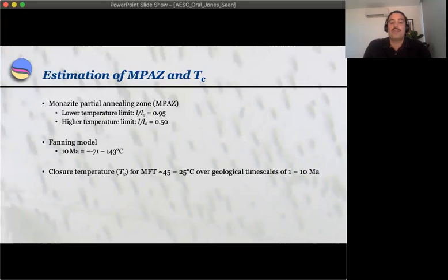Taking into account the fission track closure temperature to be approximately in the middle of the monazite partial annealing zone, the predicted closure temperature for the monazite fission track system is in range between about 45 to 25 degrees Celsius over about 1 to 10 million years.